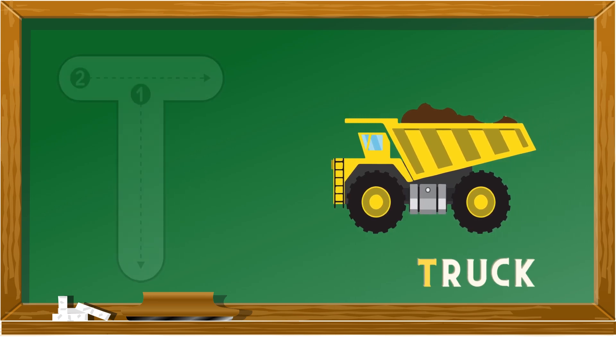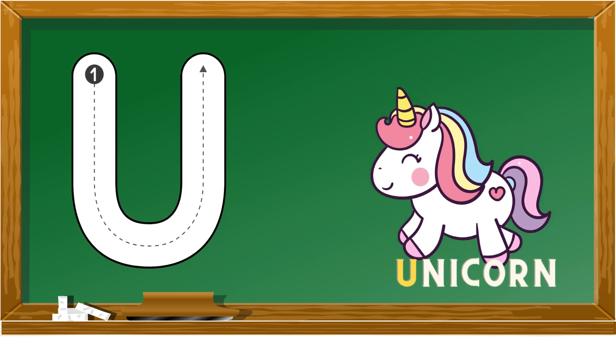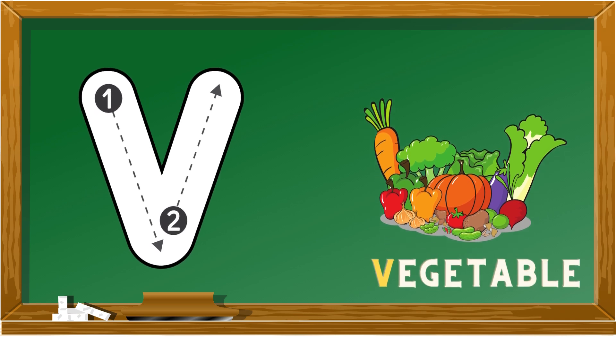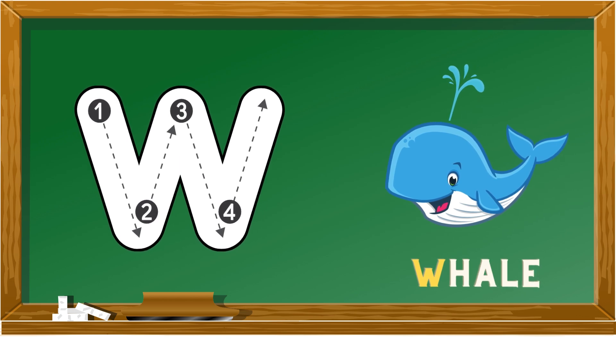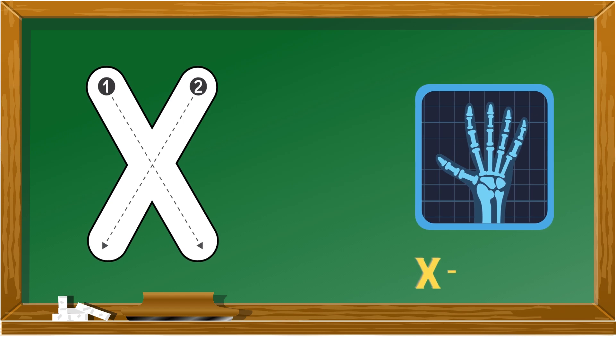U is for unicorn, V is for vegetable, W is for whale, X is for x-ray.